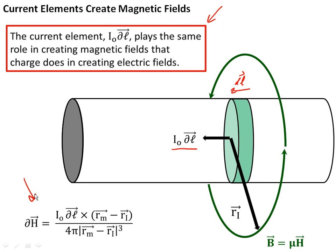The Biot-Savart law essentially tells you that this expression right here tells you what the tiny little piece of magnetic field, DH, is, that's created by the current element, I₀∂ℓ DL.